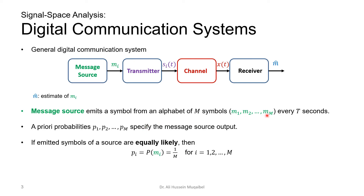Those symbols are generated with a priori probabilities p1, p2, ..., pm — that is, m1 is produced with probability p1, m2 with probability p2, and so on. These probabilities specify the message source output. If the emitted symbols are equiprobable, then the probability of each symbol is P(mi) = 1/M, where we divide 1 by the total possible number of symbols M — that's for the equally probable scenario.